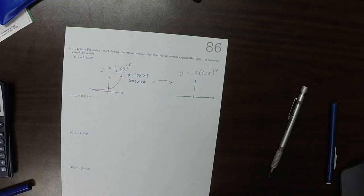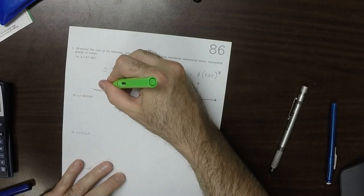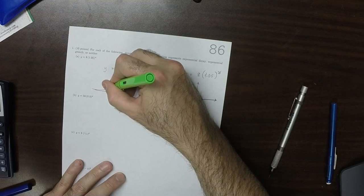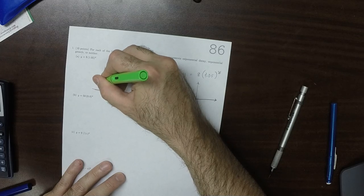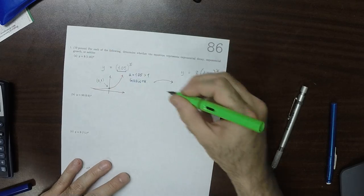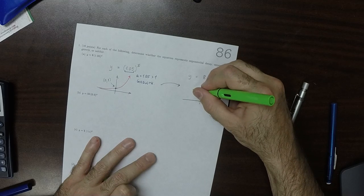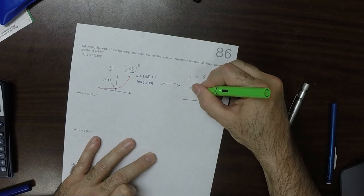It's the same now, except where this point right here was the point (0,1). Now it's going to go through the point (0,8).